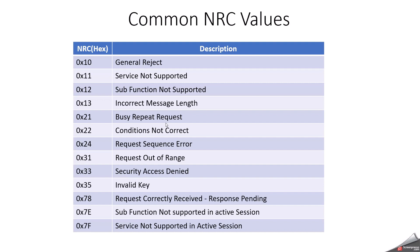NRC 21 means busy repeat request — the ECU is busy and you have to retry later. NRC 22 means conditions not correct. In development, you may check for a precondition to be met; if that precondition is not met, the ECU will return conditions not correct.